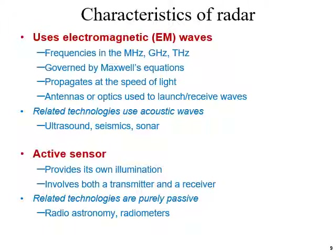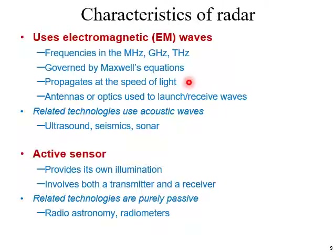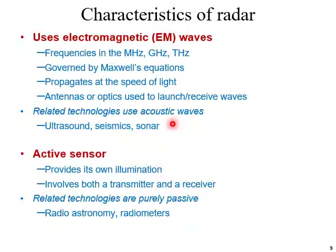Now the characteristics of radar: first of all, it uses electromagnetic waves. Frequencies are of the order of megahertz, gigahertz, and terahertz, and propagation is governed by Maxwell's equations. Electromagnetic waves — light is also an electromagnetic wave — propagate at the speed of light in vacuum. Antennas or optics are used to launch or receive the waves. Related technologies use acoustic waves like ultrasound, seismics, and sonar — these are a kind of radar but using acoustic waves instead of electromagnetic waves.